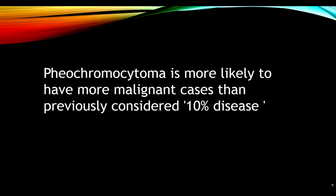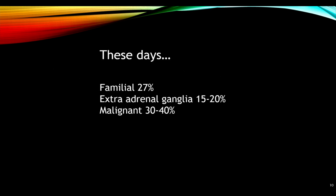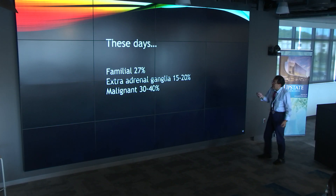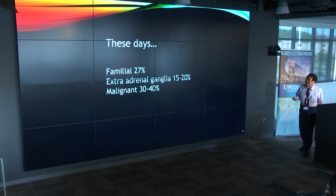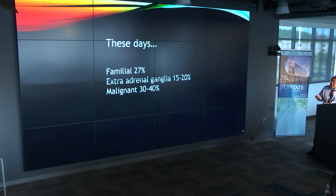Pheochromocytoma is more likely to have more malignant cases than the previously considered 10% figure in textbooks. These days, the familial rate is 27%, extra-adrenal paraganglioma malignancy is 15% to 20%, and totally the malignant rate is 30% to 40% in our literature.